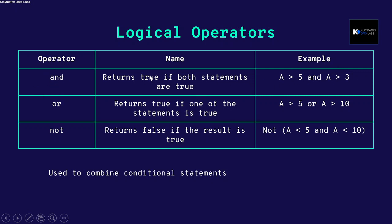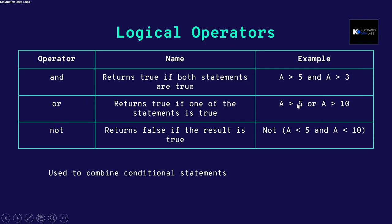The AND operator returns true if both statements are true. So in this case, 'a greater than 5' and 'a greater than 3' — if a is 10, both conditions are true, so the entire expression gives you true. The OR operator, on the other hand, returns true if either of the conditions is true.